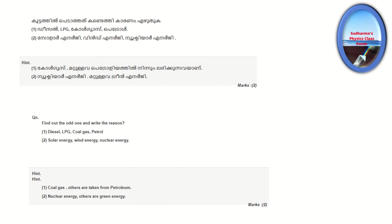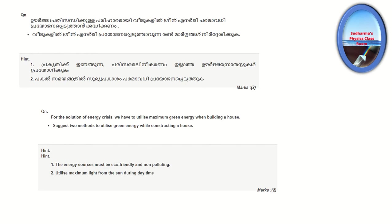Solar energy and wind energy are green energy sources. Nuclear energy is classified under brown energy. Petroleum products like LPG, diesel, and petrol are brown energy. Coal gas is also brown energy. Solar energy and wind energy are green energy. When we use nuclear energy, it is classified as brown energy.